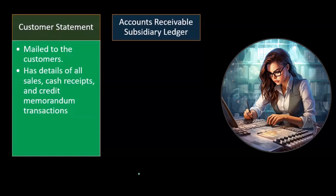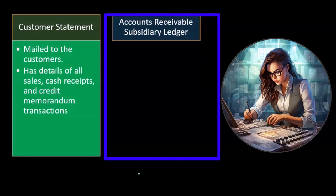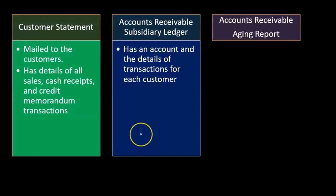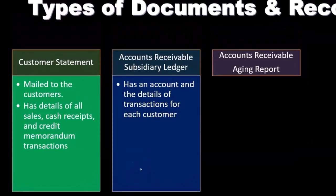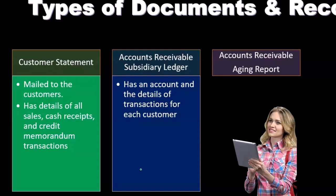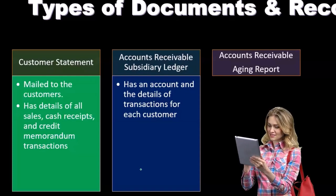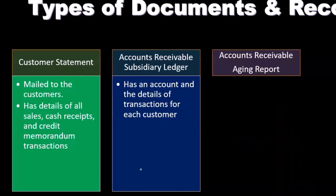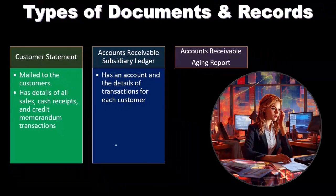The accounts receivable subsidiary ledger is obviously going to be really important when we consider the sales process and the auditing of accounts receivable. It has an account and detail of transactions for each customer. When we think about accounts receivable, we've got accounts receivable representing what is owed to the company by customers. We break that out not just on the general ledger by date, but also by subsidiary ledger — breaking it out by customer. So now we have the same detail broken out by customer, which is important for accounts receivable.